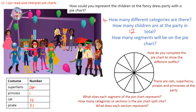Four different types of fancy dress. So if there are 12 children at the party, that means we want to split our pie chart into 12 segments. So now we're going to complete our pie chart. I'm going to change to a highlighter. Let's do it green first of all. The first ones I'm going to mark on are my superheroes. I'm going to do a little key so I know what colour represents what category. There are five superheroes, so I'm going to colour in five pieces of my pie chart.